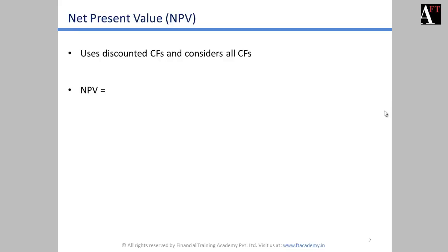NPV stands for net present value. This is a concept you would have come across under the Quants material as well, but here we look at net present value from the project perspective. Whereas under time value of money it was for any type of cash flow situation, here the net present value is used for discounting the cash flows that occur over the project life. The NPV method of capital budgeting considers all the cash flows that occur in the project.